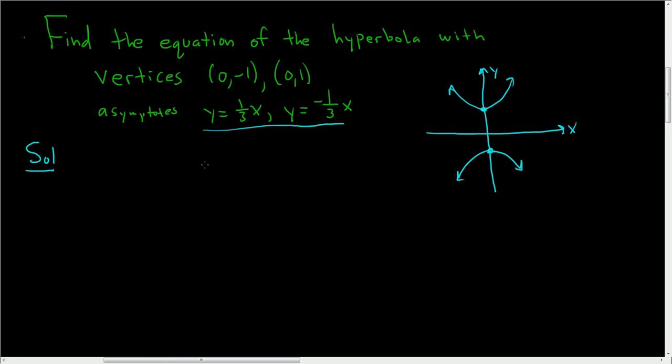So because the hyperbola opens up and down, the formula for the asymptotes is y equals plus or minus a over b times x minus h plus k. Where the center, hk, is the center of the hyperbola.